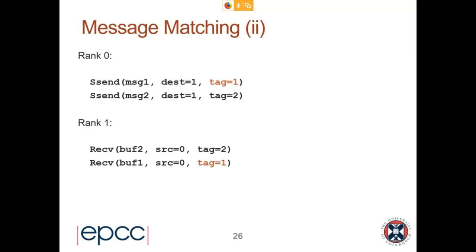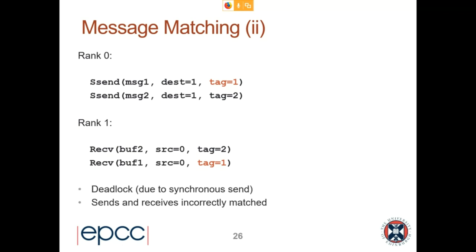Option two: this code will deadlock. The synchronous send from rank 0 has tag 1, and the first receive posted has tag 2. Because these are synchronous, both of these will never complete — it doesn't matter that the next receive has the correct tag, because it's never going to come out of that first receive. It'll just wait forever for a tag-2 message to arrive; meanwhile the first synchronous send will never complete because it hasn't been received. The solution is of course just to reverse the order of one of them. This is why synchronous sends help you get correct code.